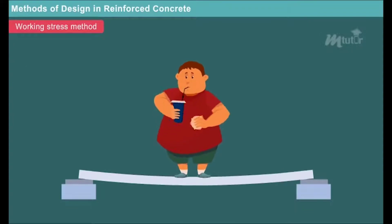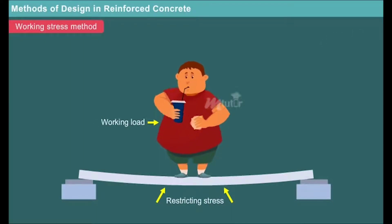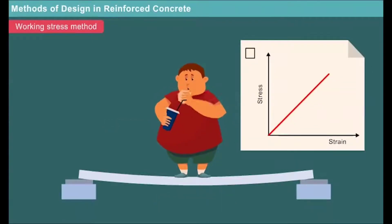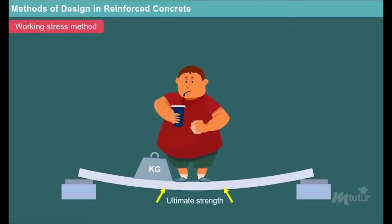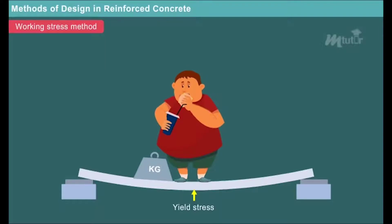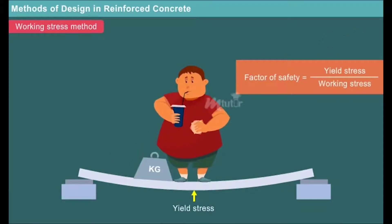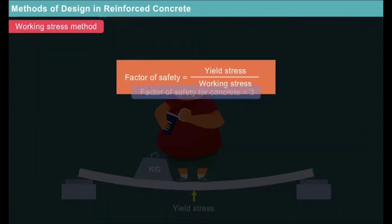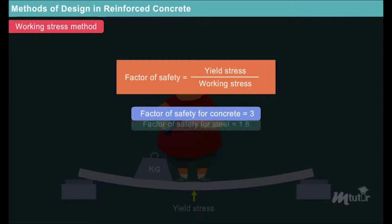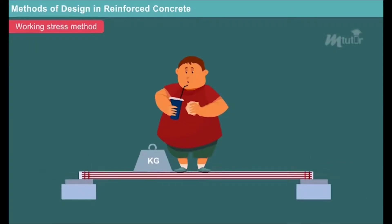Working stress method ensures safety by restricting the stresses in materials which may be induced by the expected working loads on the structure. The assumption of linear elastic behaviour is justifiable since the permissible stresses are kept below the ultimate strength of the material. The ratio of yield stress to the corresponding working stress is termed as the factor of safety. In this method, a factor of safety of 3 is used for concrete and 1.8 for steel. This method assumes strain compatibility, where the strain in reinforcing steel is assumed to be equal to that of the adjoining concrete.